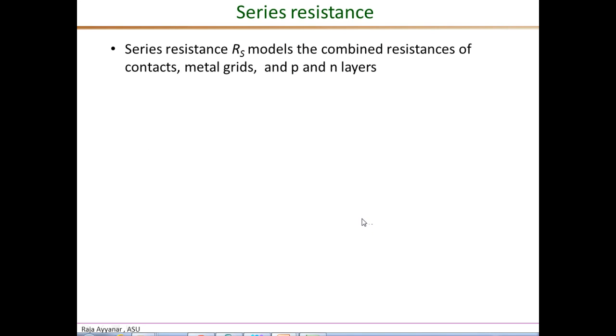So far, we have been focusing on the ideal PV cell model. Now let's go ahead and introduce some of the main non-idealities, mainly the parasitic resistances. In this slide, we will introduce the series resistance, denoted by Rs. The series resistance models all the resistances in the contacts, in the metal grid, as well as the equivalent resistance encountered by the current flow in the p-type and n-type layers of the semiconductor material.